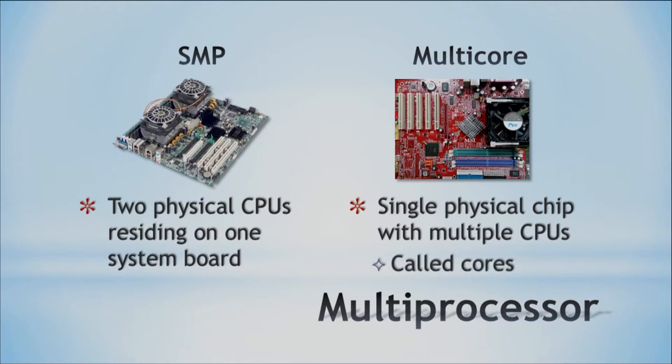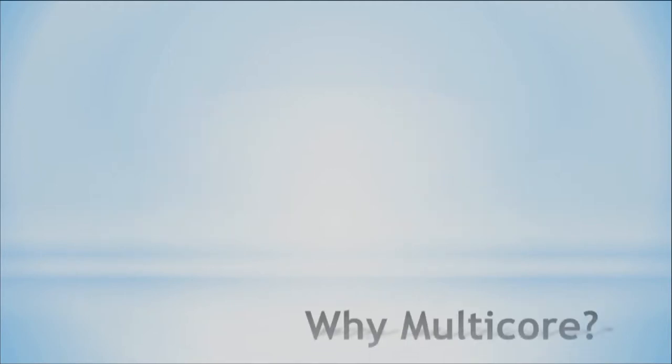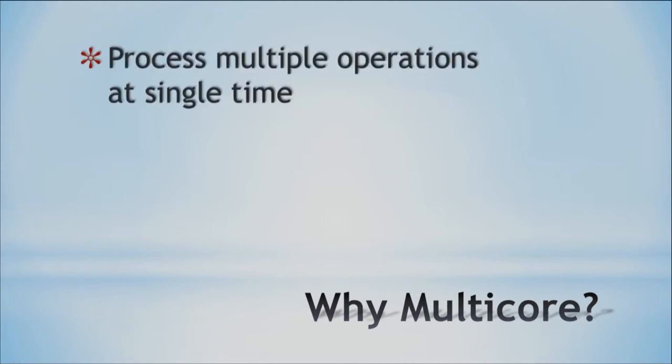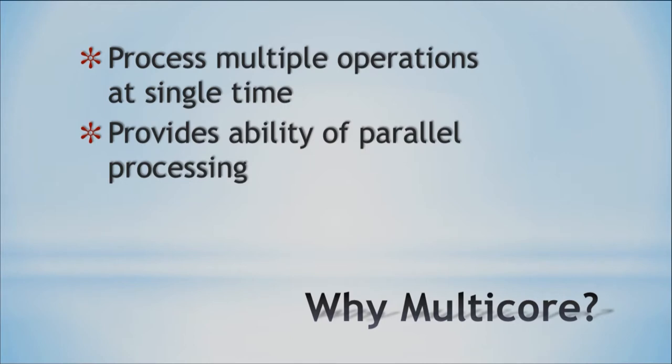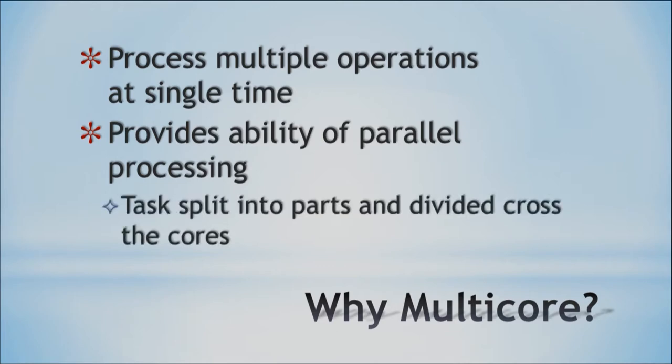Each of the processing units within a multi-core chip is called a core. Why do we go to multi-core? It allows us to process multiple operations at a single time, which helps improve speed. We also have parallel processing — computing simultaneously — where you split tasks into parts and divide them across the cores. Most things now are multi-core: for example, an Intel i5 is a dual-core, and an Intel i7 is a quad-core. CPUs come with many different core counts.